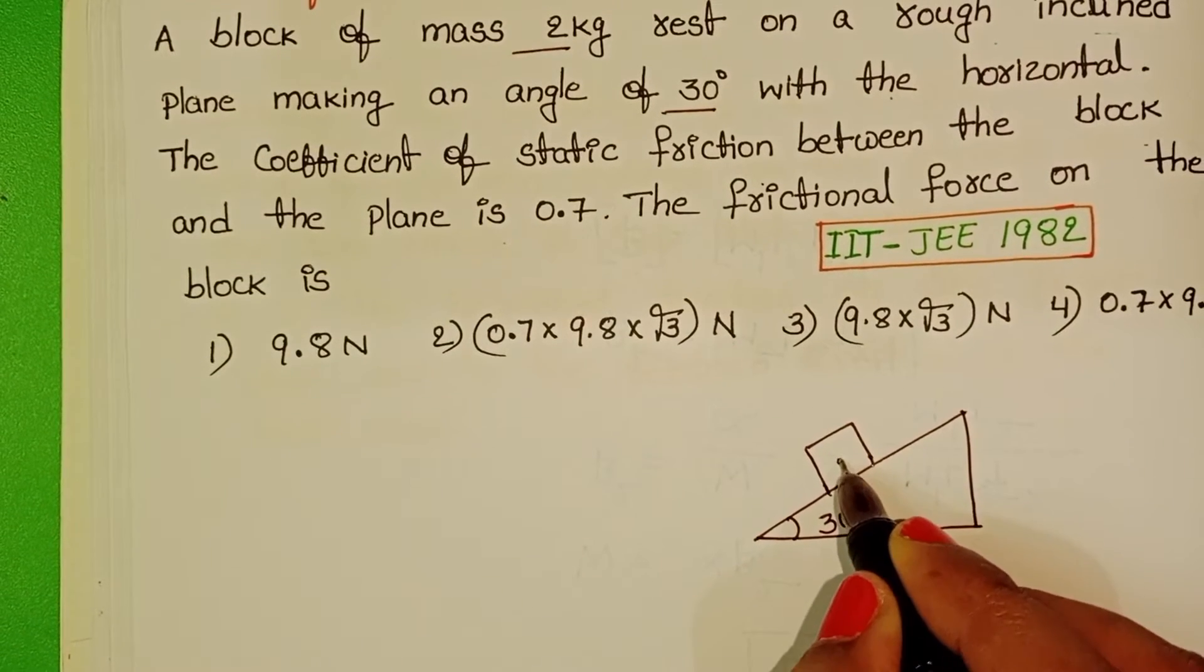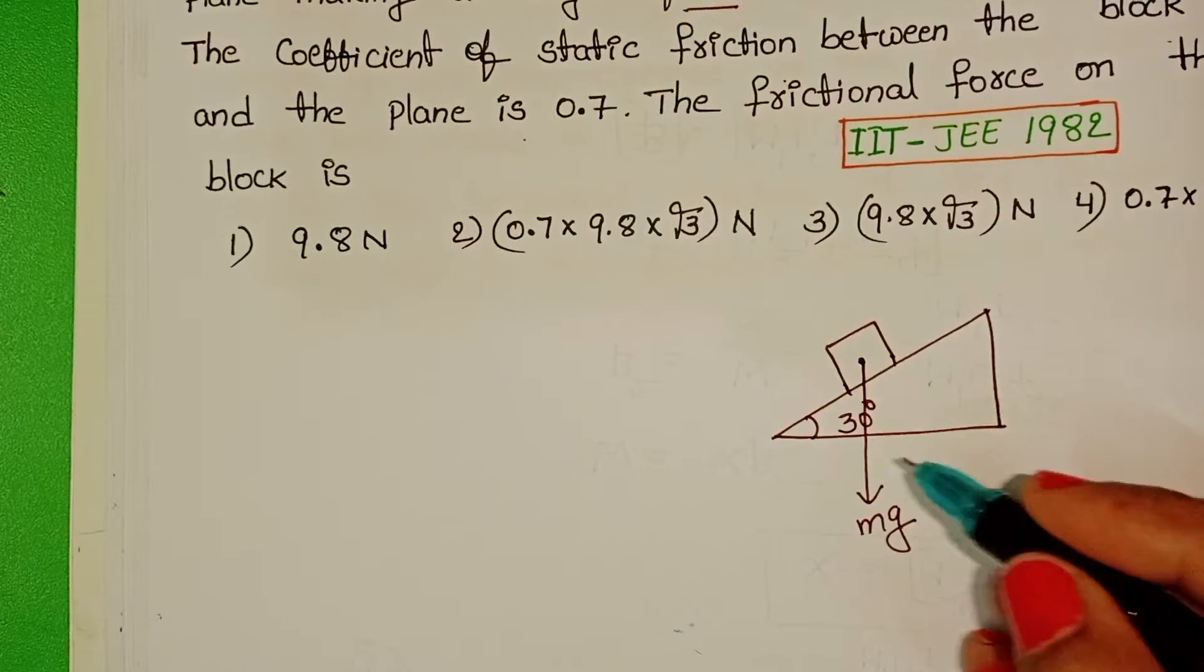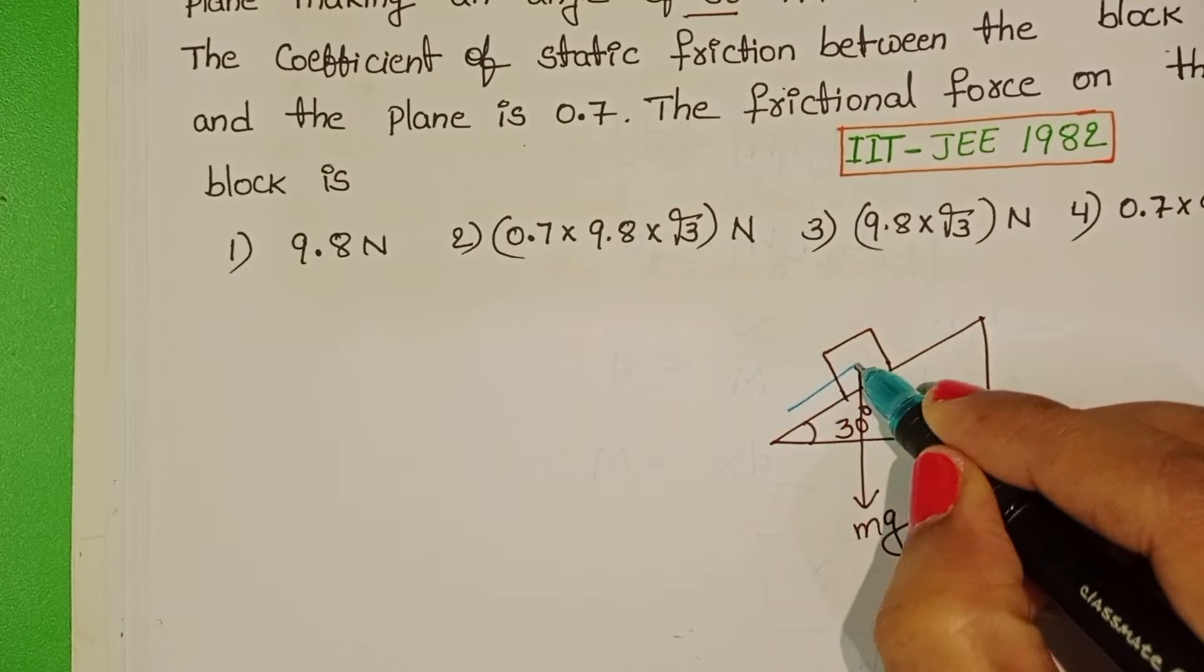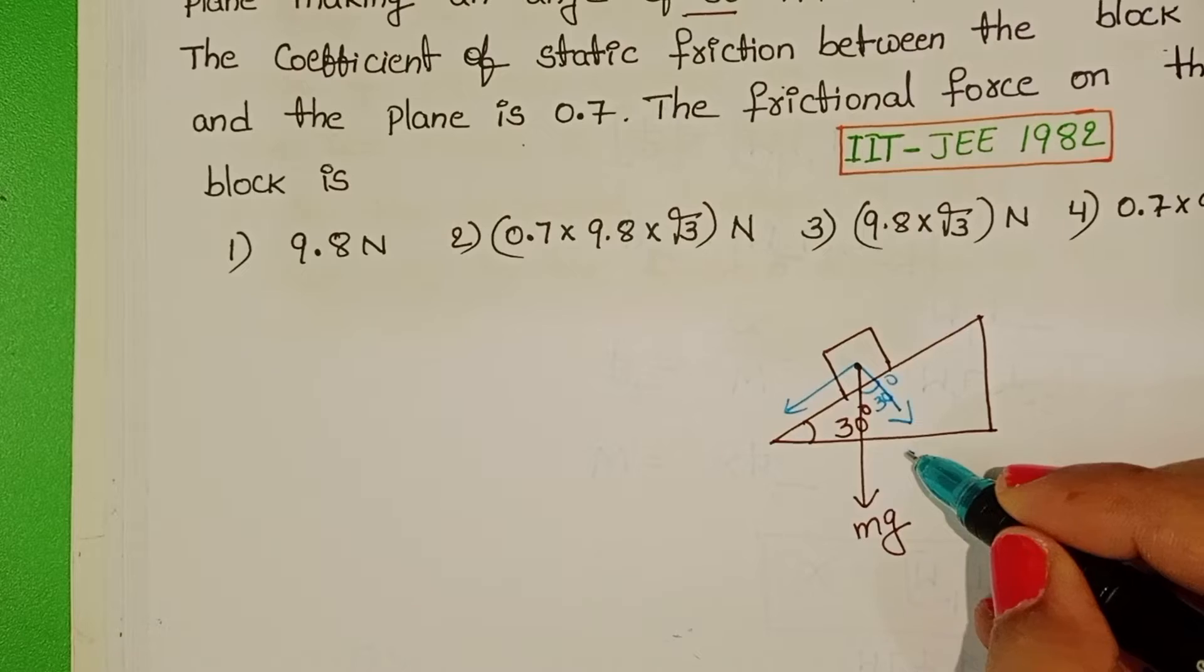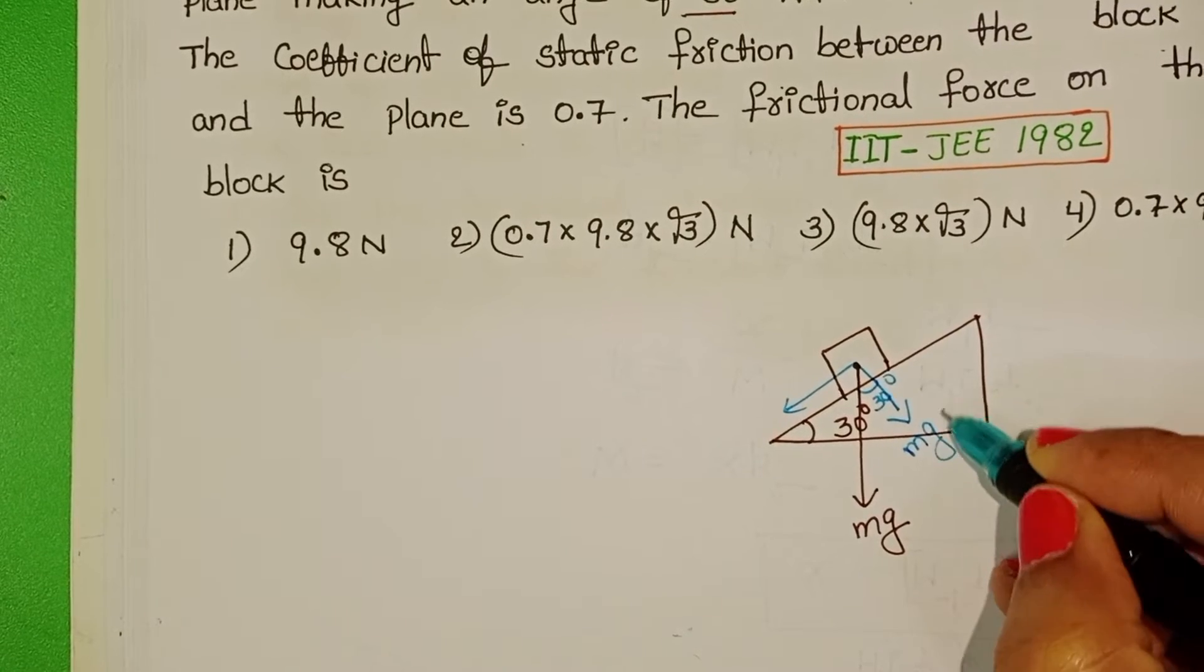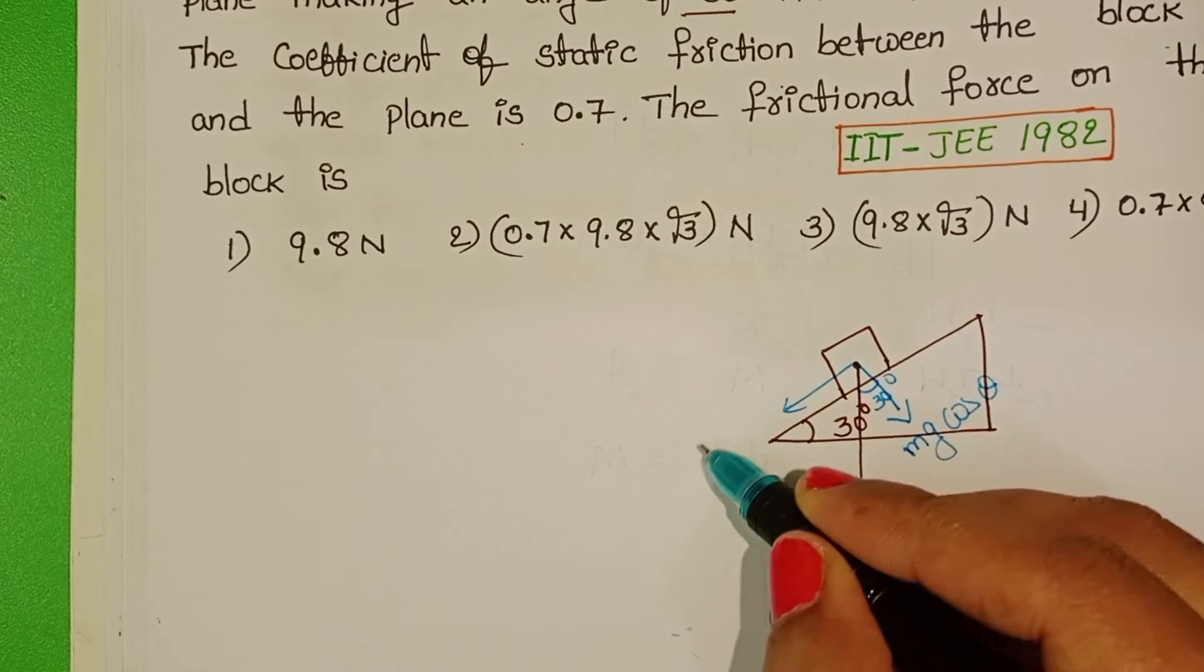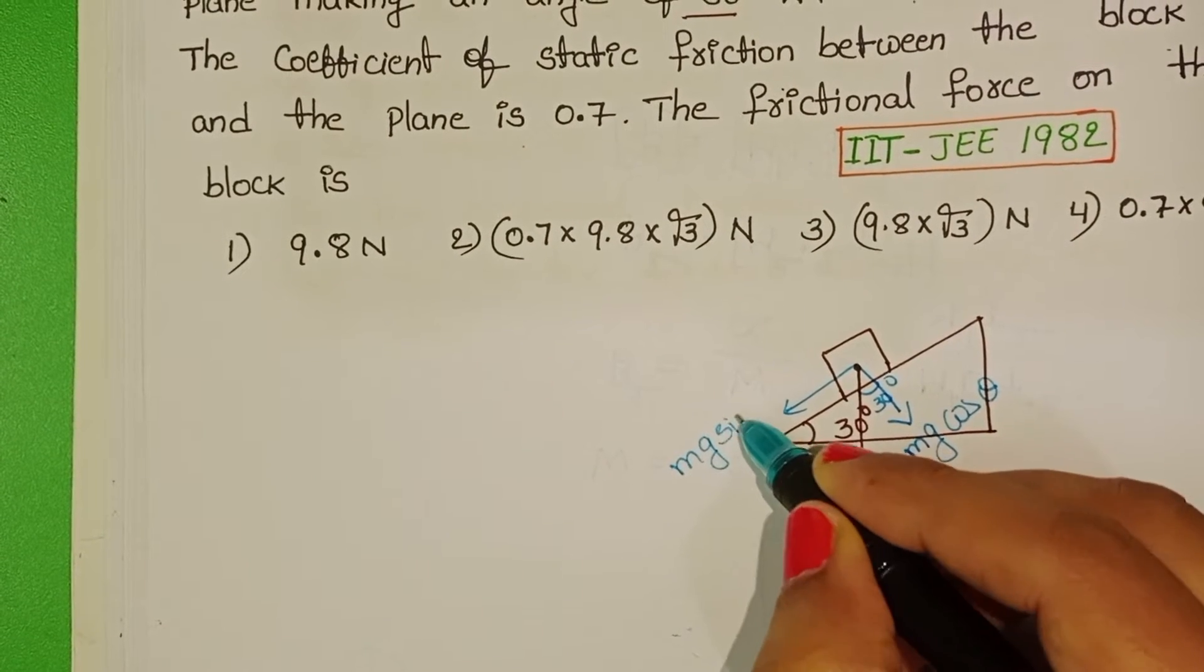Weight of the block is acting in downward direction. So weight is resolved into two components. Along this direction, component is mg cos theta. And along the inclined plane in downward direction, component is mg sin theta.